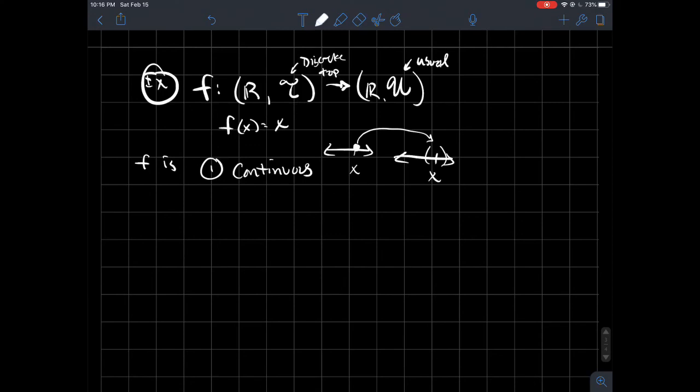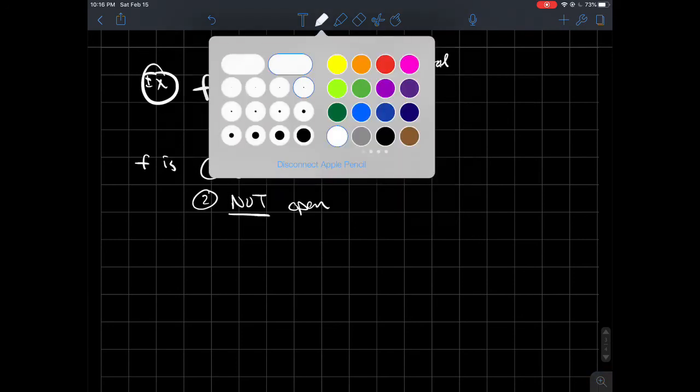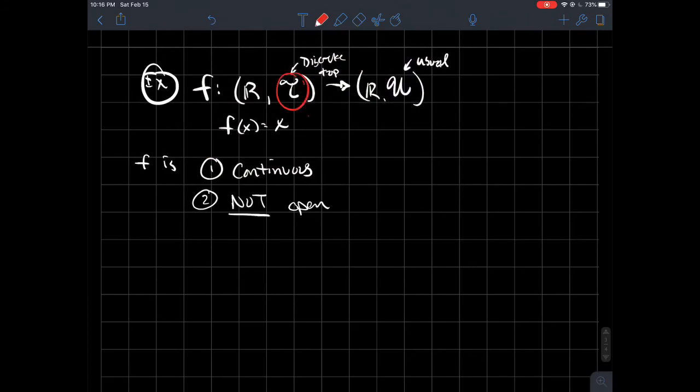Now the trickier part, and again the new concept, is f is not open. And to see that, so f is not open, so what we'd like to see is, is it possible to find an open set in the domain now that does not get sent to an open set over here? So is there an open set whose image is not in U?